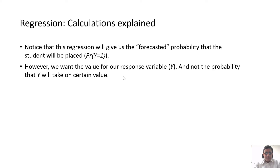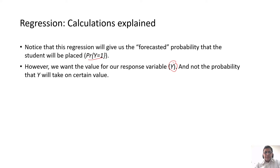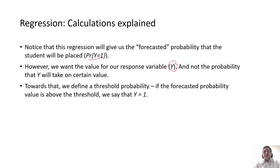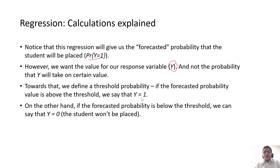We do not want the probability of y equal to 1 — we actually want the value of y. How do we do that? One simple way is to define a threshold value of the probability. If the forecasted probability of y equal to 1 is above a certain threshold, we will code y as 1. And if the probability of y equal to 1 is less than that threshold, we will code y as 0. So the model will predict that the student will not get placed if the probability is below that threshold.